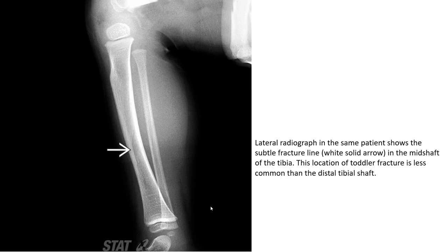The lateral radiograph in the same patient shows the subtle fracture line, indicated by the solid arrow, in the mid-shaft of the tibia. Mid-shaft location of the toddler fracture is less common than the distal tibia shaft.